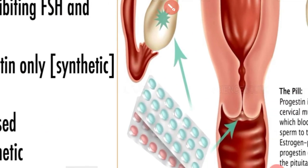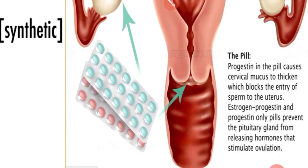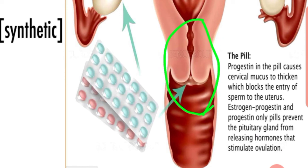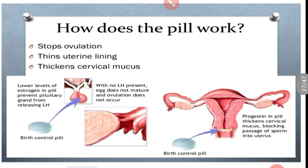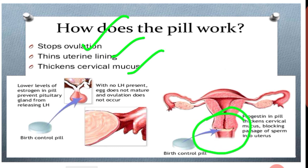If a woman is taking pills, the progestin in the pill causes the cervical mucus in the cervix to become thickened, which blocks the entry of sperm into the uterus. Estrogen and progestin-only pills prevent the pituitary gland from releasing hormones that stimulate ovulation. The oral contraceptive pill also thins the uterine lining and thickens the cervical mucus.